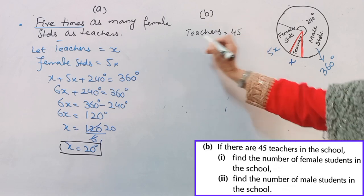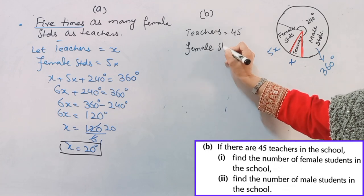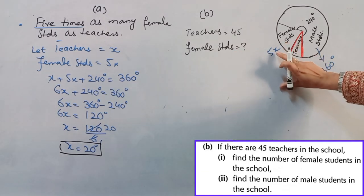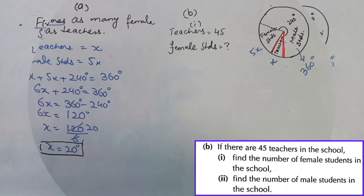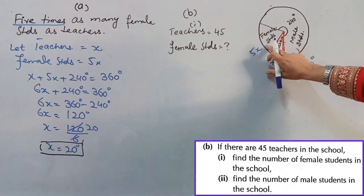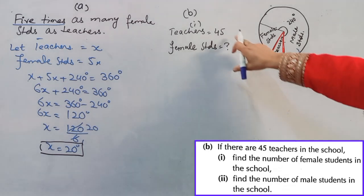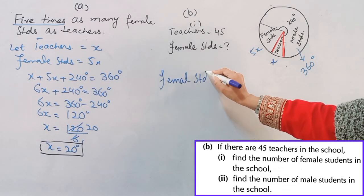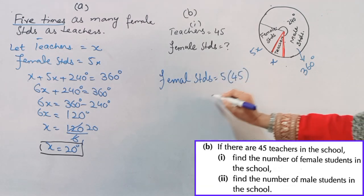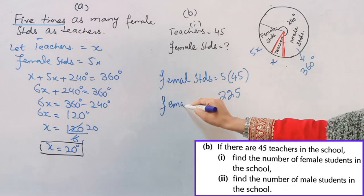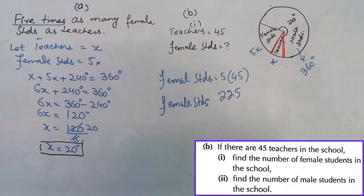Teachers are 45, that is given, and you have to find the number of female students. Female students equals 5 multiplied by 45, which gives 225.